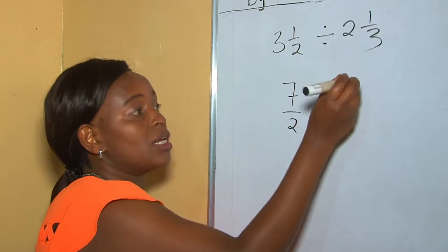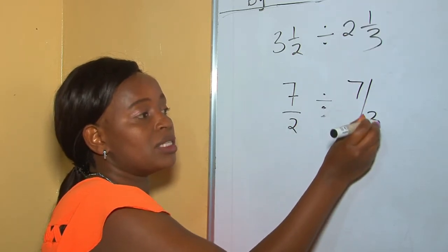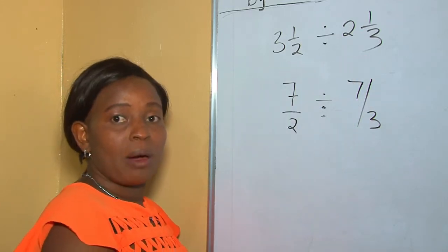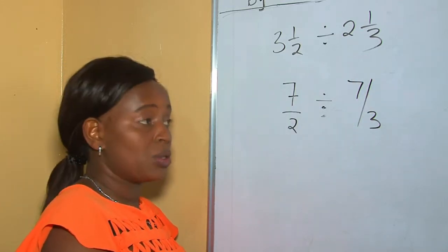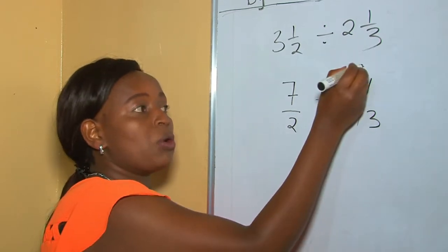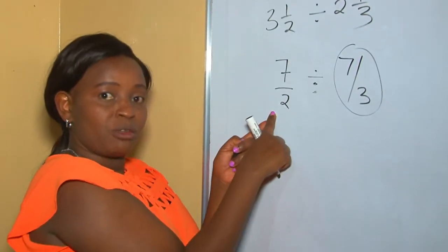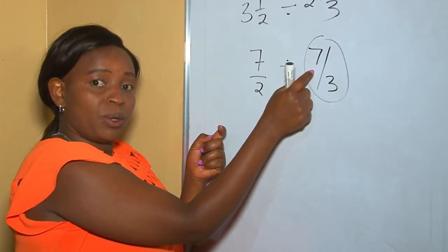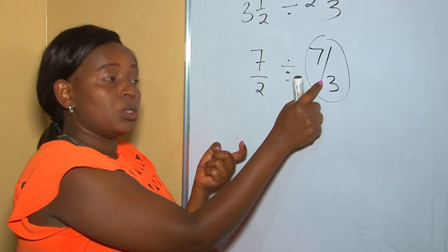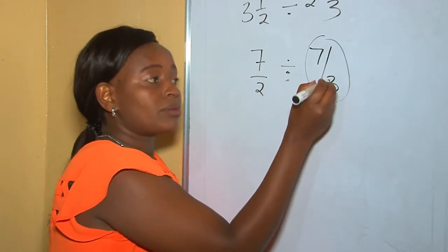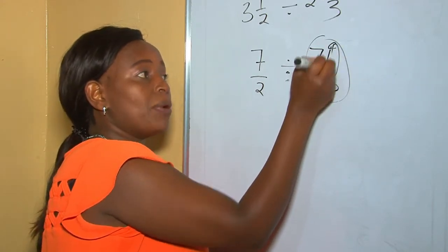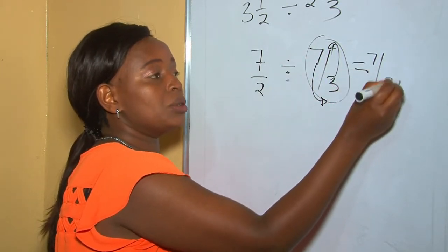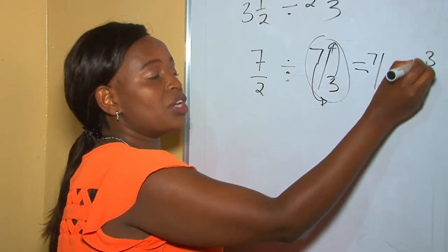6 plus 1 is 7, giving us 7 over 3. Once we have changed our mixed fractions to improper fractions, the next step is to get the reciprocal of our second fraction. The denominator goes up and the numerator comes down, so we have 7 over 2 divided by 3 over 7.